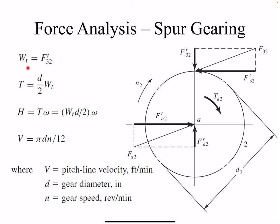Here we write the tangential component W_t. For gear 3 acting on gear 2, the torque would be the radius times the tangential component, and the power would be the torque times omega. We then substitute torque times omega, and the velocity at the point of contact is V = π·d·n / 12.